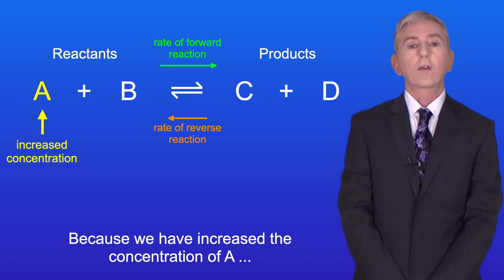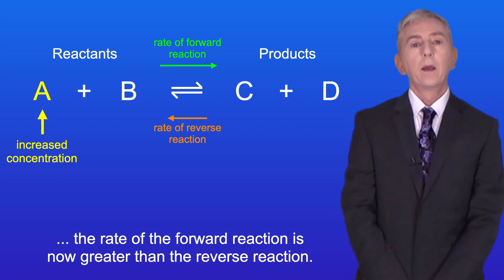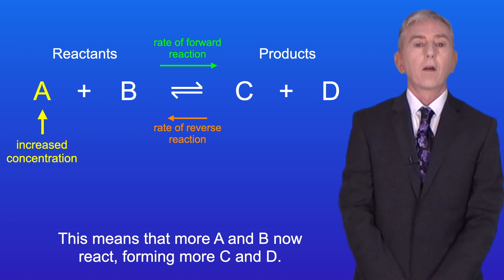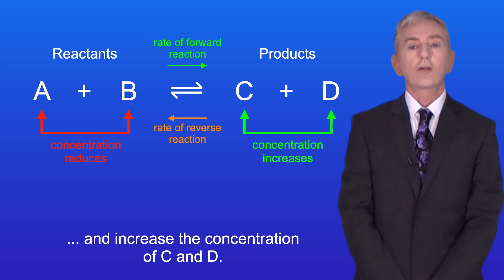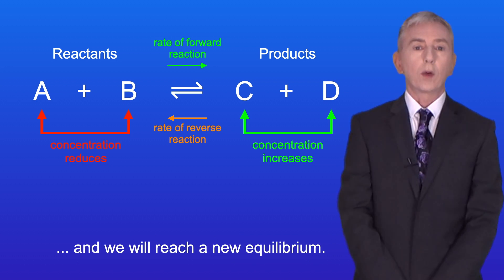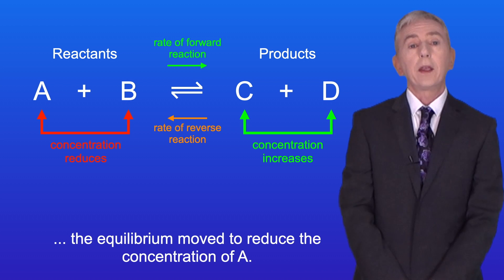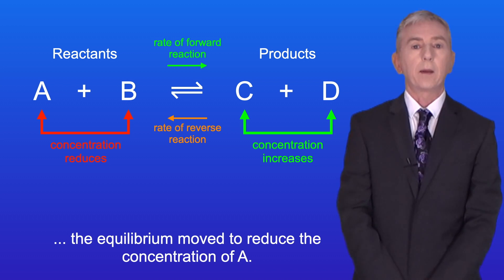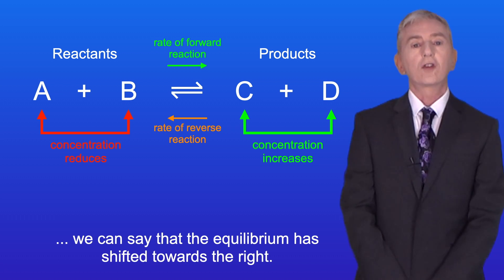Because we've increased the concentration of A, the rate of the forward reaction is now greater than the reverse reaction. This means that more A and B now react, forming more C and D. So the effect of this is to reduce the concentration of A and B, and increase the concentration of C and D. Eventually the rates of the forward and reverse reactions will be the same, and we will reach a new equilibrium. So we can see that when we increased the concentration of reactant A, the equilibrium moved to reduce the concentration of A. Because we've now formed more products, we can see that the equilibrium has shifted towards the right.